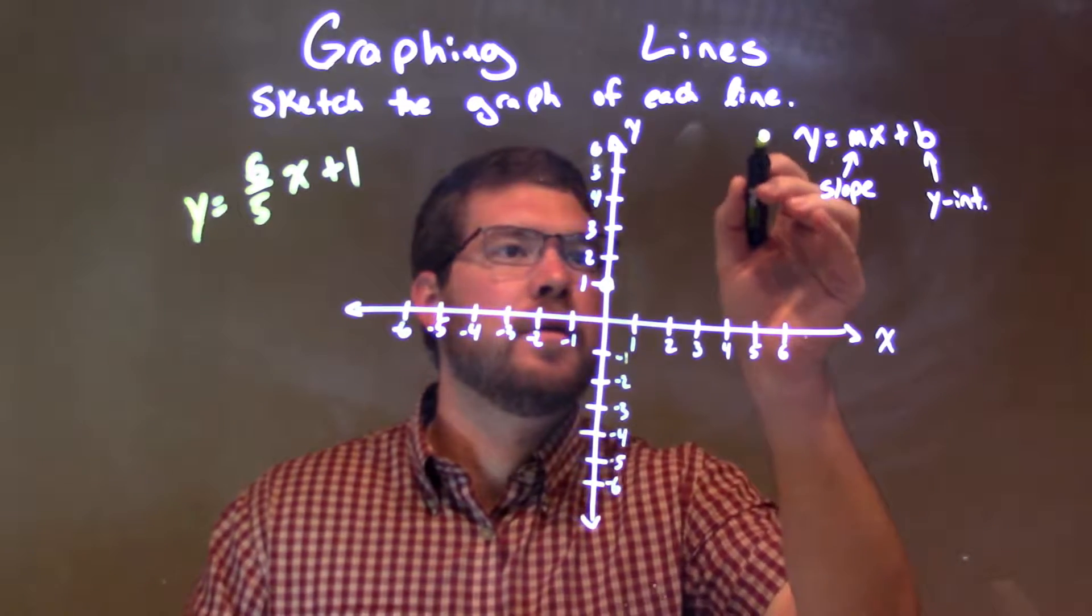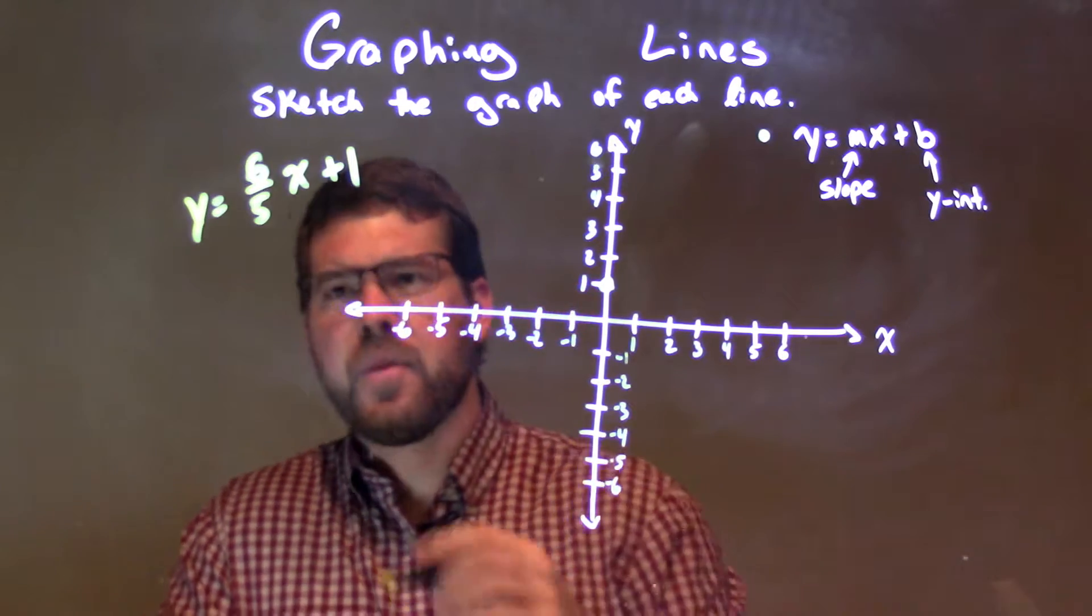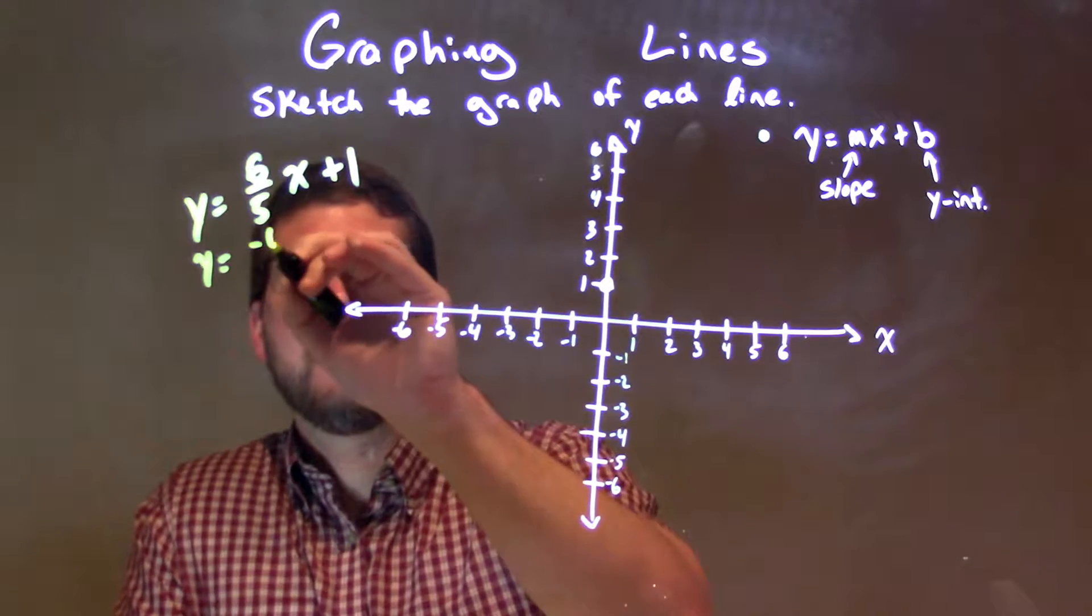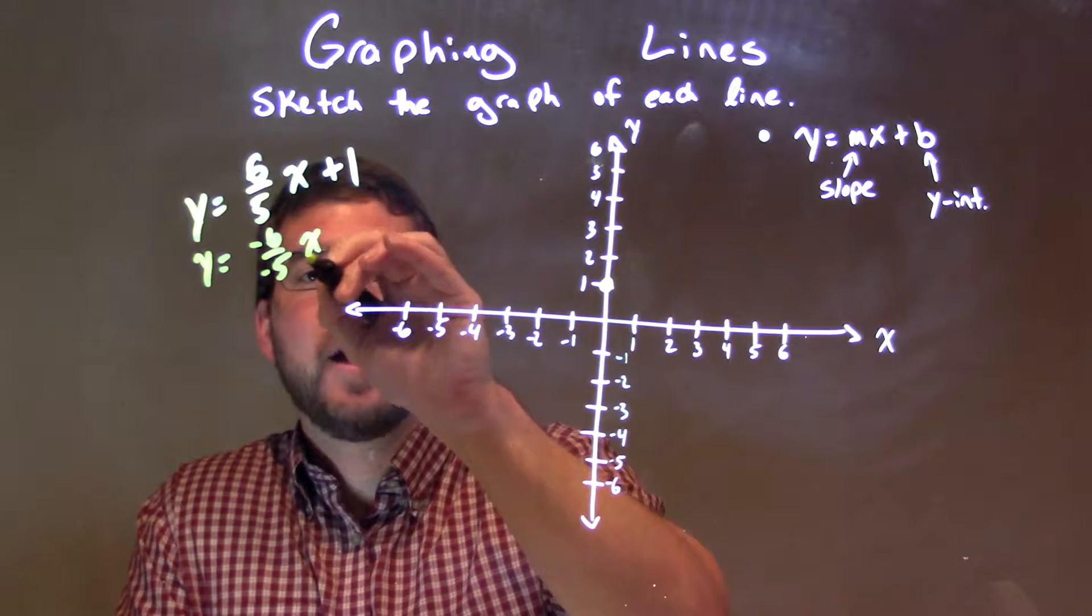Well, what if you want a point on the graph? One thing I like to see here, y equals 6 fifths x, the same thing as negative 6 over negative 5x plus 1.